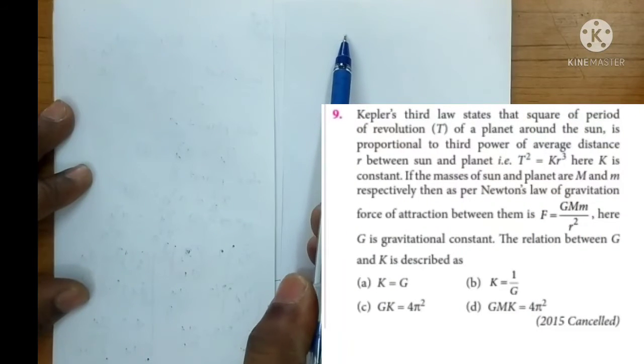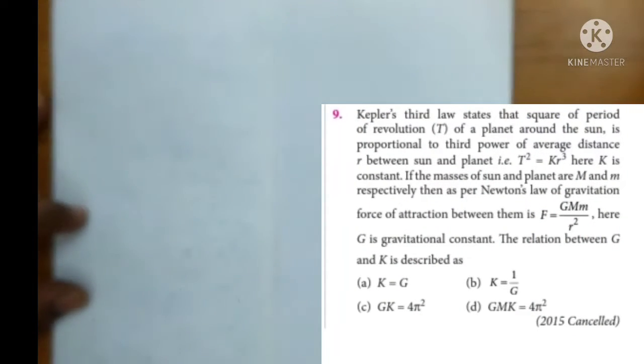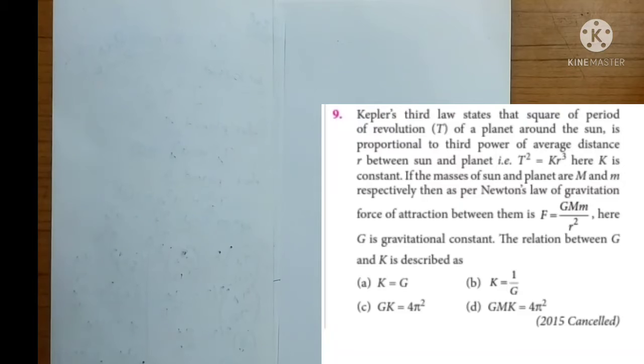Kepler's third law states that square of period of revolution of a planet around the sun is proportional to third power of average distance between sun and planet. T² = k × r³. Here k is constant. If the masses of the sun and the planet are capital M and small m respectively, then as per Newton's law of gravitation, force of attraction between them is...